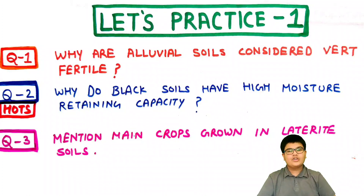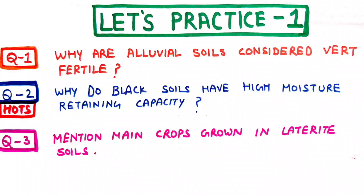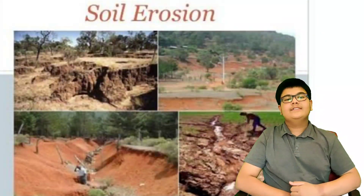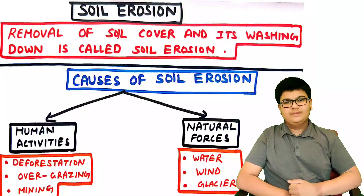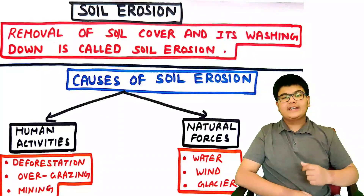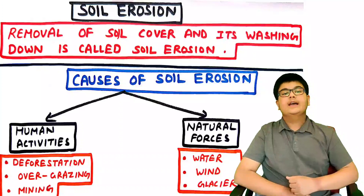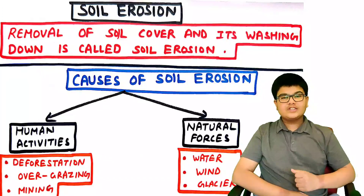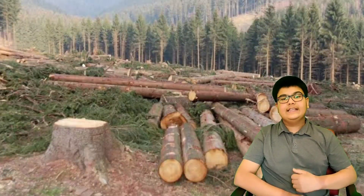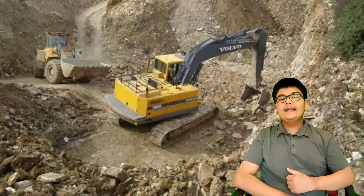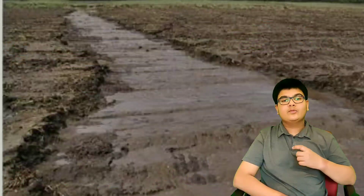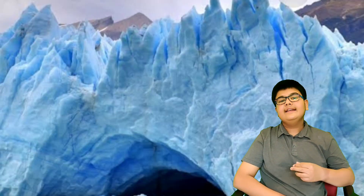Now we come to the last topic of this chapter: soil erosion. Soil erosion is the removal of the fertile top layer of soil. It can be caused by human activities such as deforestation, overgrazing, and mining, as well as by natural forces such as water, wind, and glaciers.